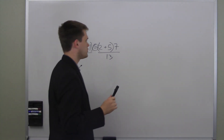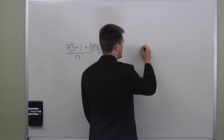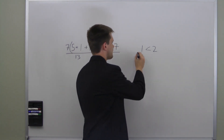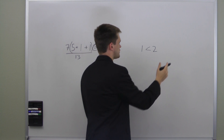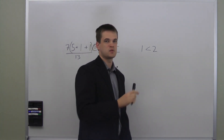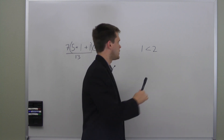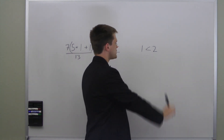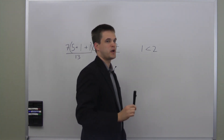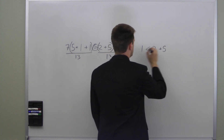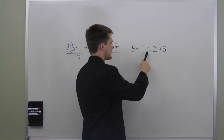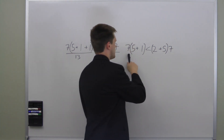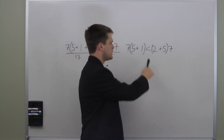Similar to equations, we have what's called an inequality. We might have the inequality: one is less than two. This consists of a mathematical expression on each side and a sign indicating which side is greater or lesser. Similar to equations, we can perform the same operations on both sides of the inequality sign. We can add five to both sides — six is still less than seven. We can multiply both sides by seven — forty-two is still less than forty-nine. We could divide by thirteen, and it's still true.